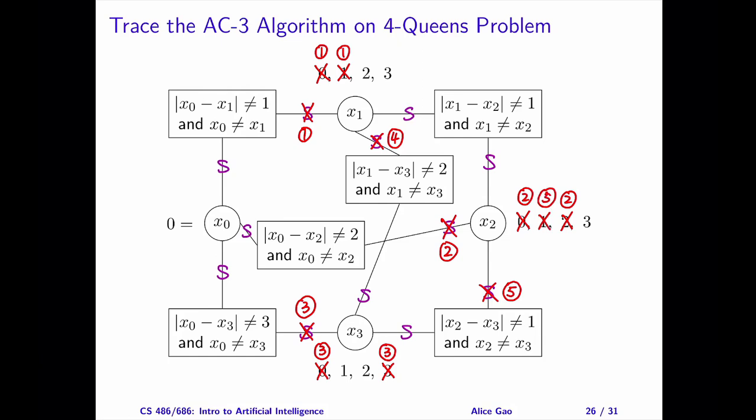Since we reduce the domain of x2, do we need to add any arcs back to the set S? There are 3 candidates. Due to the edge case, we do not add back the arc between x2 and x3, where x3 is the primary variable. We should add the other two arcs back to S. Since they are already in S, we do not need to add them again.